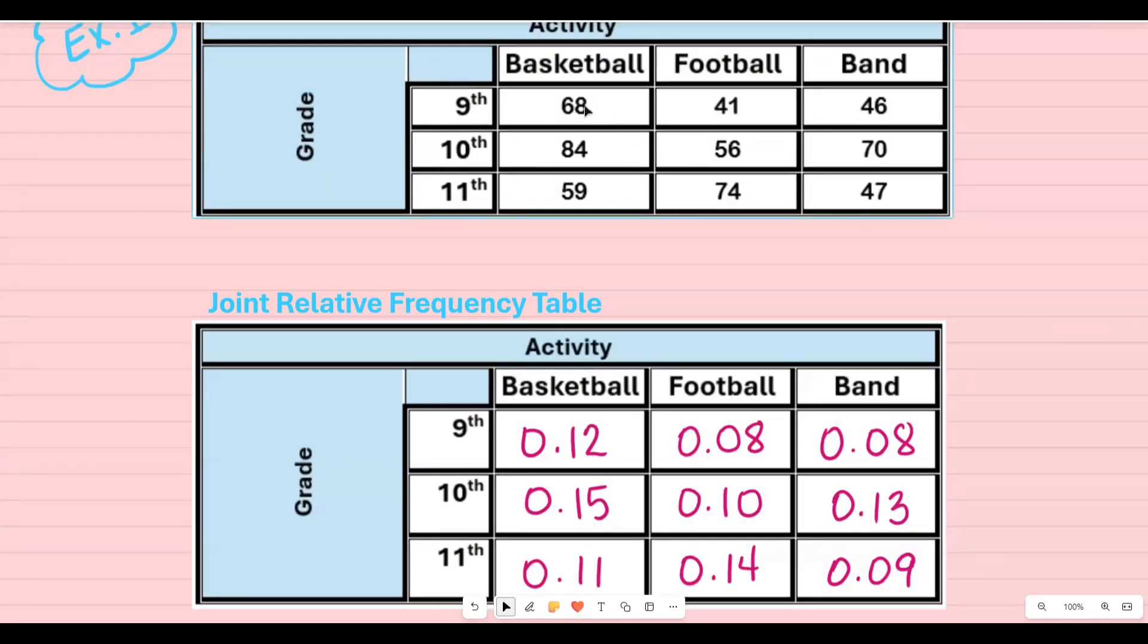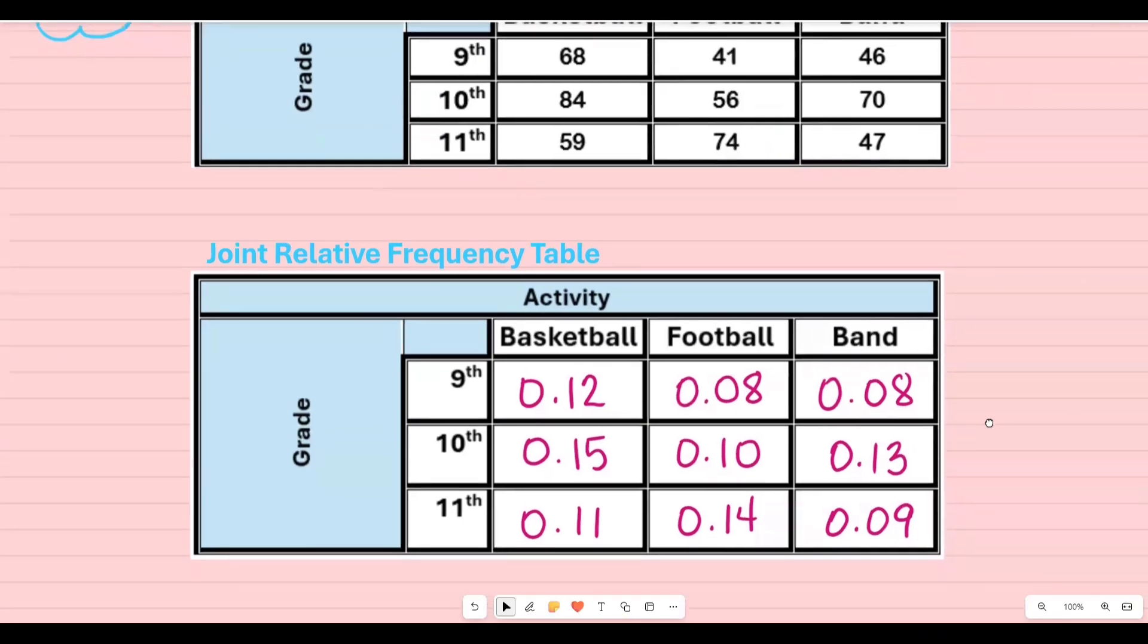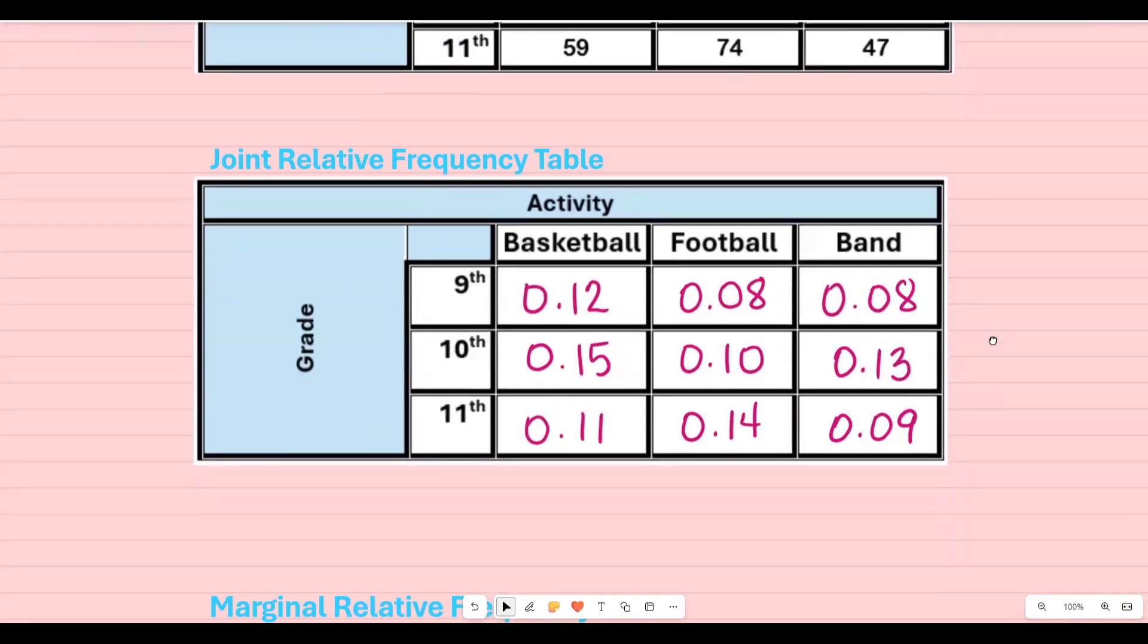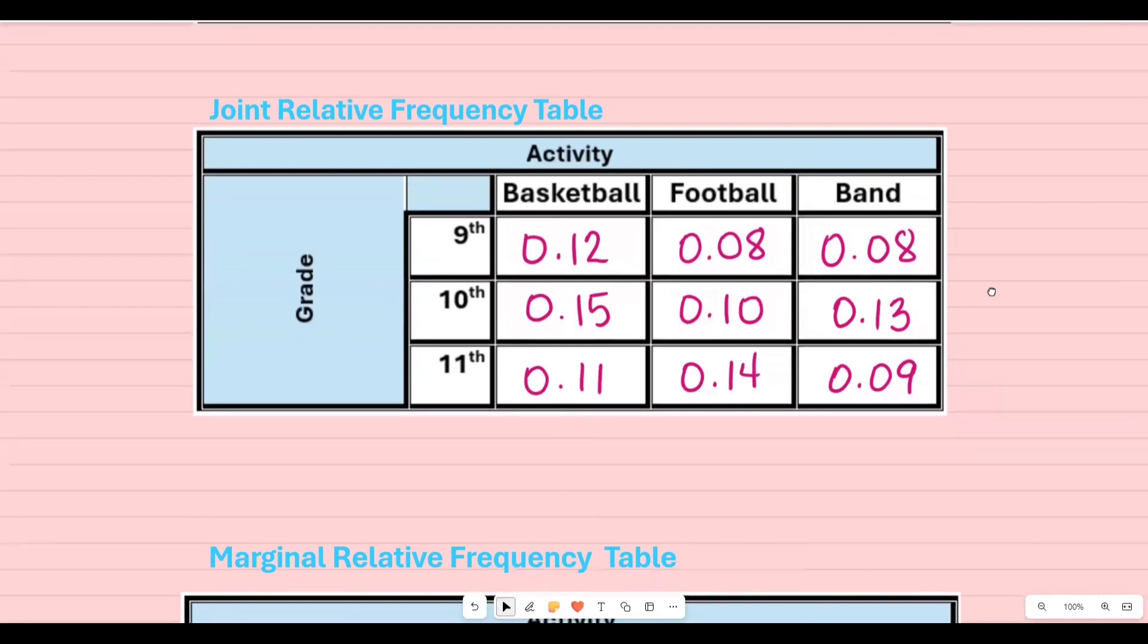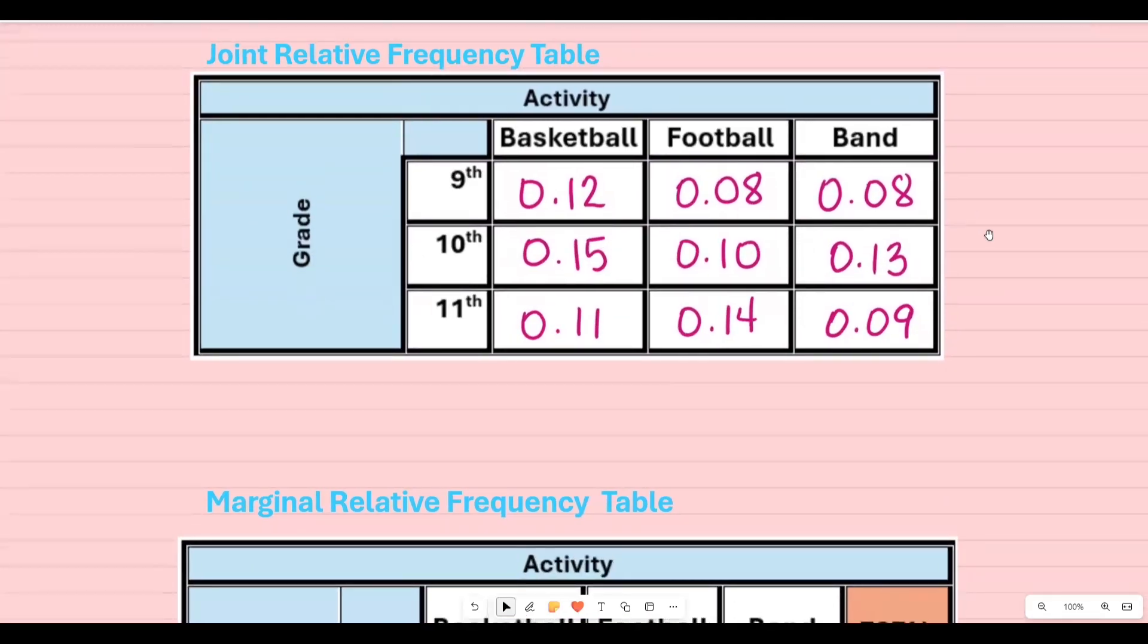After going through and dividing each cell by 545, these are the answers that I get. Make sure you convert it from a fraction to a decimal. I just rounded it to the nearest hundredths. This is your joint relative frequency table.